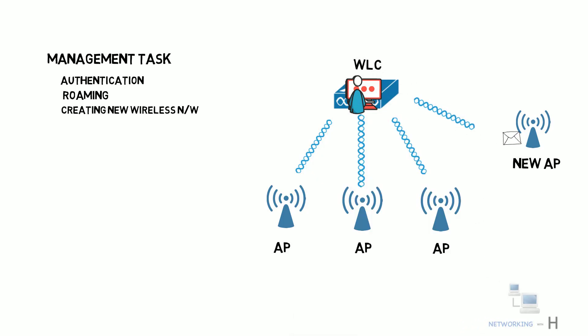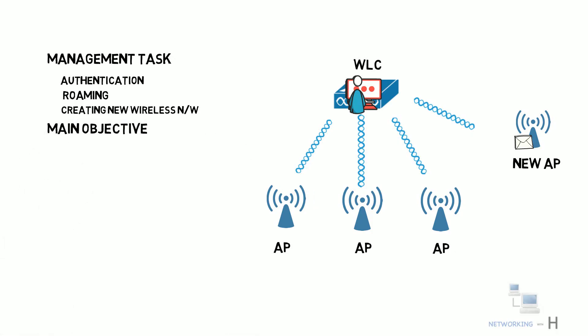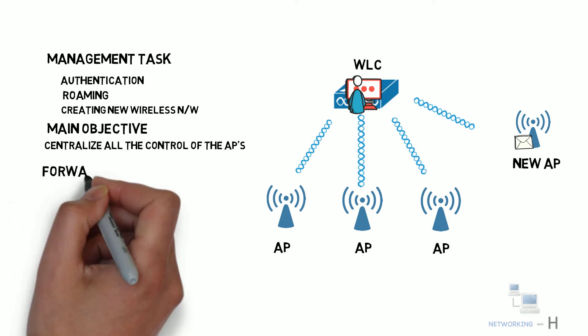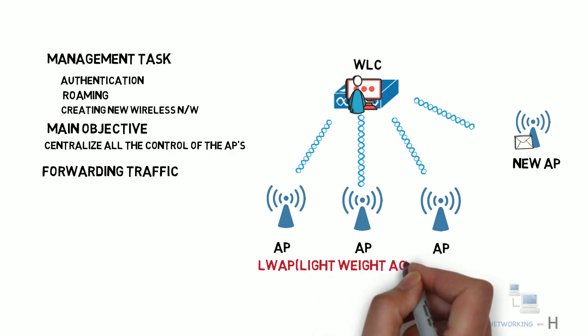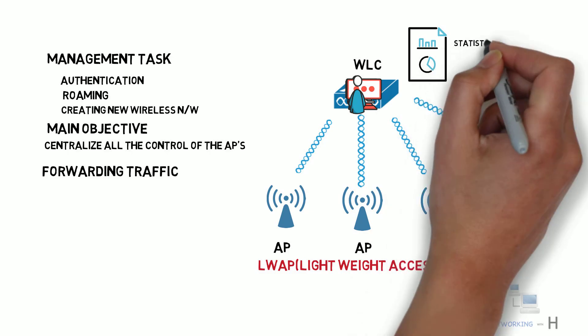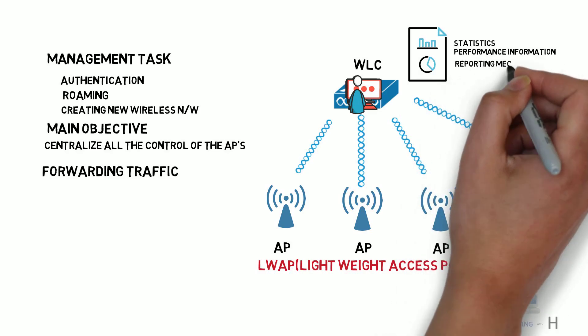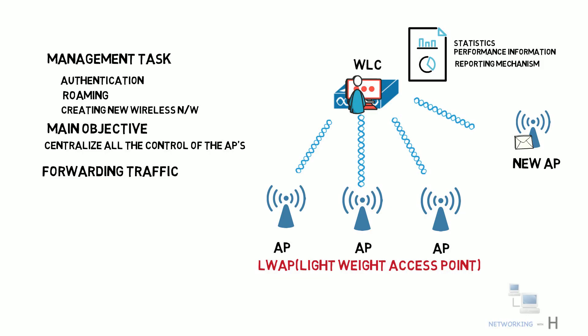That wireless controller will push the configuration change to all of your access points. The main objective of the WLC is to centralize all control of the access points. The access points are now responsible for just forwarding traffic — we call these access points lightweight access points, or LWAPs. The wireless controller can also provide statistics and performance information, so you will know exactly how well your wireless network is running. Most wireless networks have some type of reporting mechanism so you can get long-term information about network performance. In summary, by using WLCs, access points are easy to access, easy to manage, and error-free.